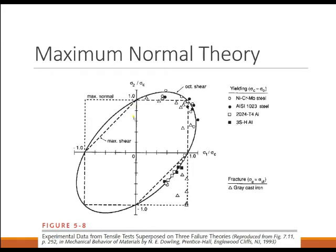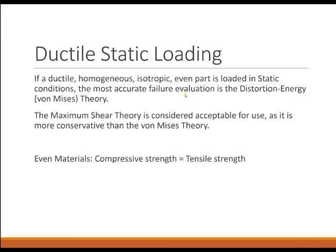Here are graphs of actual materials that were tested. The ductile materials are shown up here, and the gray cast iron down here is a brittle material. The brittle material went a lot further than the von Mises predicted, and it appears that the maximum normal theory does a relatively good job of predicting how it's going to fail. On the other hand, the ductile materials really seem to follow the von Mises better than any other theory. The conclusion after many years of testing is that if a material is ductile, homogeneous, isotropic, and even, and loaded in static conditions, then the failure evaluation we ought to use is the distortion energy or von Mises theory — with the caveat that using the maximum shear is acceptable because it's more conservative. If the material is ductile, you cannot use the maximum normal stress theory.